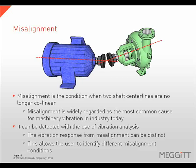Misalignment is a condition when two shaft center lines are no longer co-linear. It is widely regarded as the most common cause for machinery vibration in industry today, and it can be detected with the use of vibration analysis. The vibration response from misalignment can be very distinct, allowing the user to easily identify different misalignment conditions.